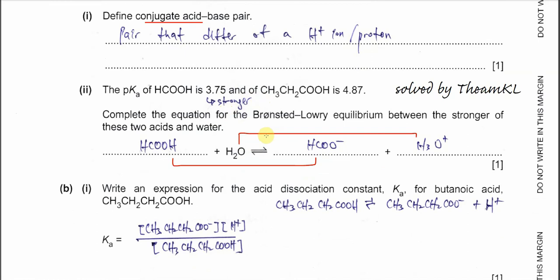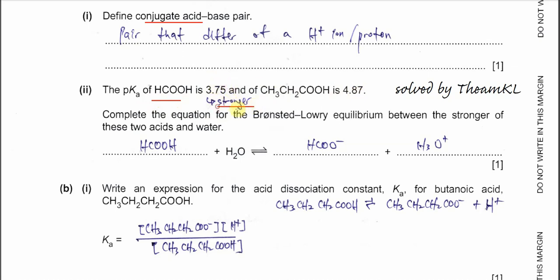Part 2. The pKa of methanoic acid is 3.75 and the pKa of propanoic acid is 4.87. When pKa is smaller, it is a stronger acid — larger Ka means stronger acid. Because the pKa of methanoic acid is smaller than propanoic acid, methanoic acid is the stronger acid.